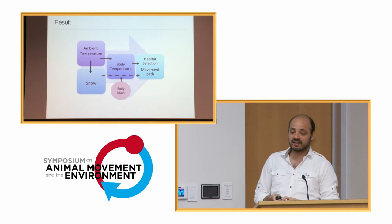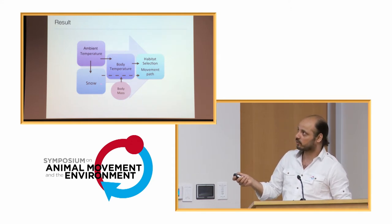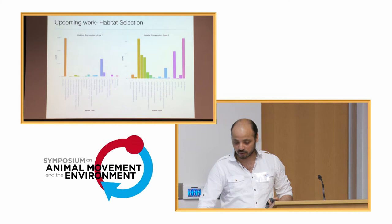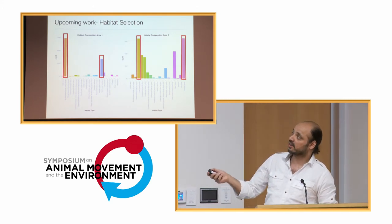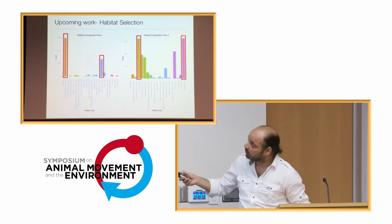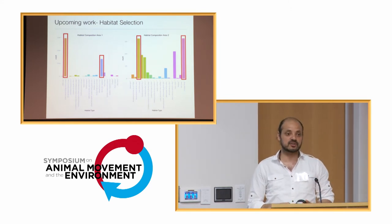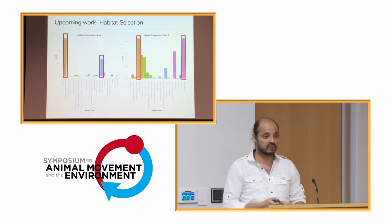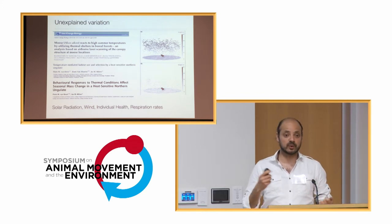To summarize: ambient temperature affects snow depth, which also affects body temperature, and snow affects movement path — this sort of chain link is building up. But clearly there is more we need to know. For example, I have not yet associated this with habitat selection — this is just a preliminary analysis. There are very different habitats in the two areas: more mires and heath land in area one, and younger forest with clear cuts more common closer to the coast. More intensive forestry means more food for moose, so there are clear habitat-level differences as well.